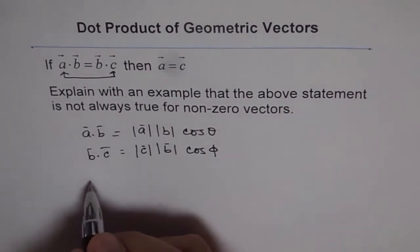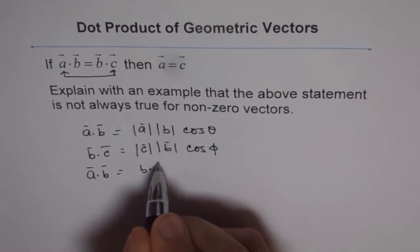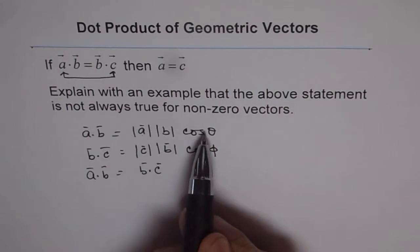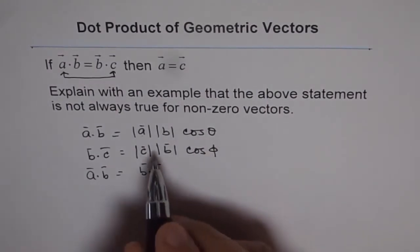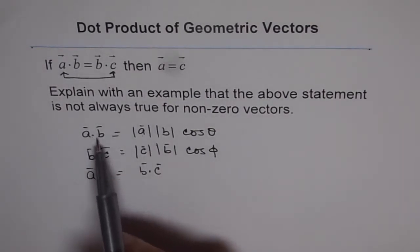So when you say that A dot B equals B dot C, then actually what are you saying? Then you are saying that A cos theta equals C cos phi. Do you understand? So this actually means if you compare this, if you are saying these two things are equal.